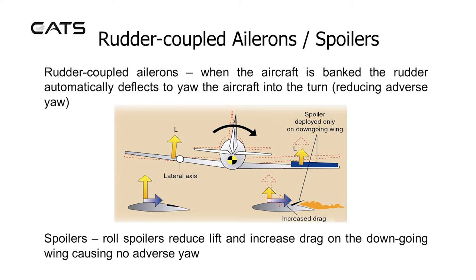Rudder Coupled Ailerons and Spoilers. When the aircraft is banked, the rudder automatically deflects to yaw the aircraft into the turn, reducing adverse yaw. Spoilers: roll spoilers reduce lift and increase drag on the down-going wing, causing no adverse yaw.